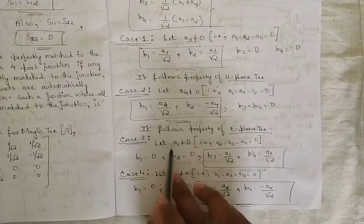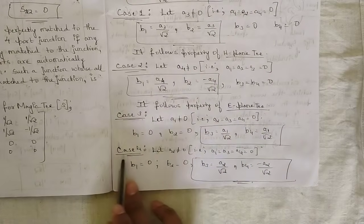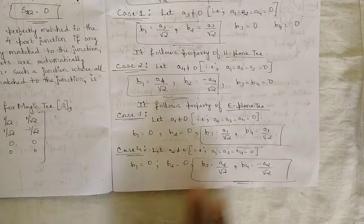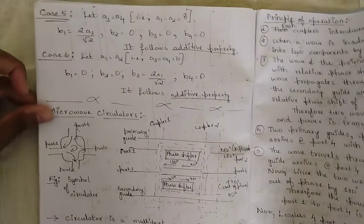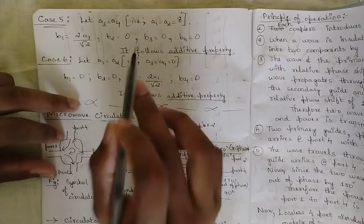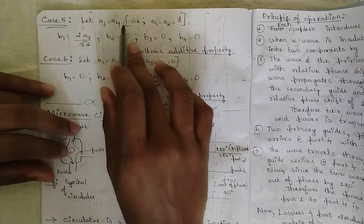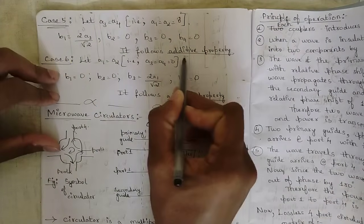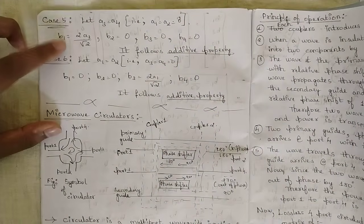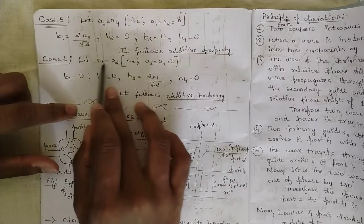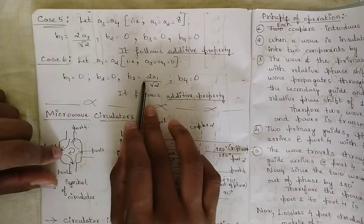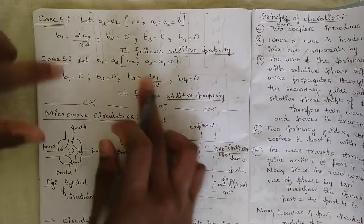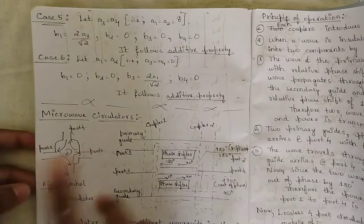Case 3: a1 ≠ 0, all others zero — gives values for b3 and b4. Case 4: a2 ≠ 0, all others zero — gives values for b3 and b4. Cases 5 and 6 demonstrate the additive property: in case 5, a3 = a4 with a1 = a2 = 0, giving b1 = 2a3/√2 and b2 = b3 = b4 = 0; in case 6, a1 = a2 with a3 = a4 = 0, only b3 is activated. These are the 6 cases for Magic T.